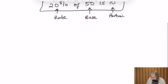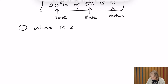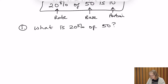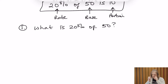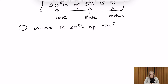The first question we're going to look at is: what is 20% of 50? If we look at this initially, we recognize that 100% of 50 is 50, so if we're looking for 20% of 50, we know the answer is going to be a number less than 50.